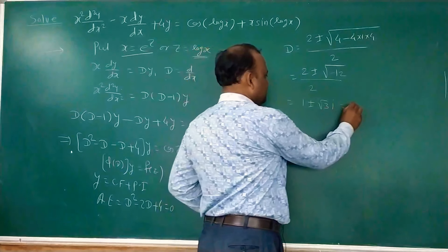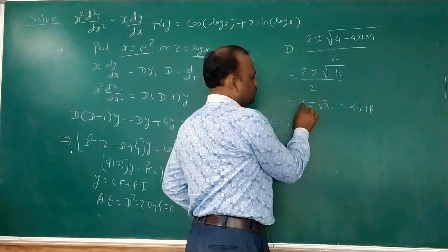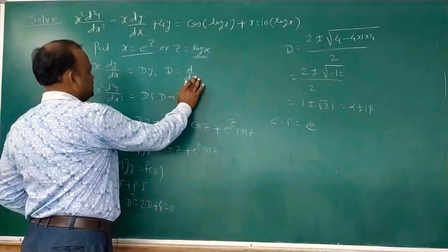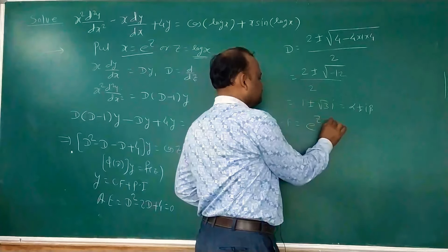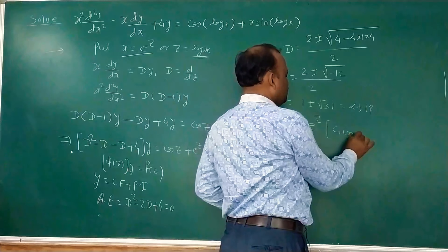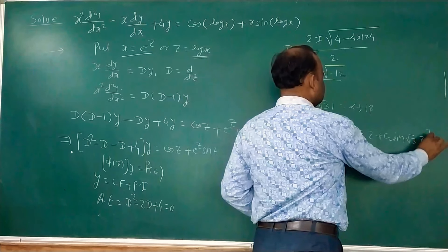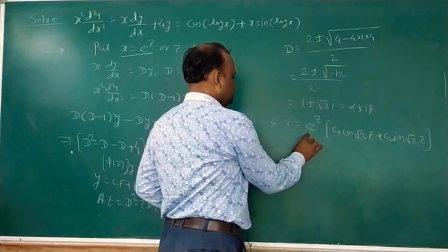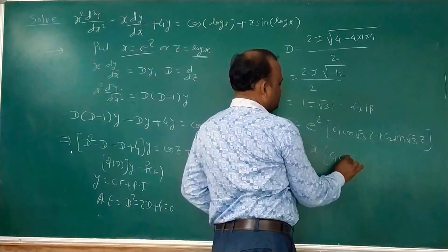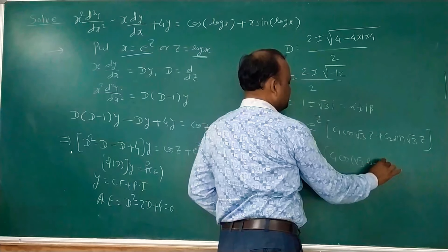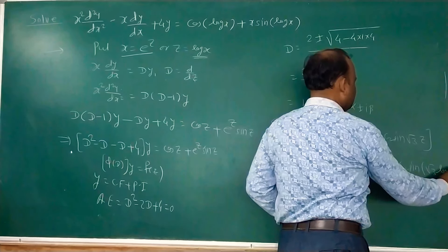With complex roots 1 ± √3·i, the CF in terms of z is e^z·(c₁cos(√3·z) + c₂sin(√3·z)). Since e^z = x and z = log x, converting back to x gives: CF = x·[c₁cos(√3·log x) + c₂sin(√3·log x)].